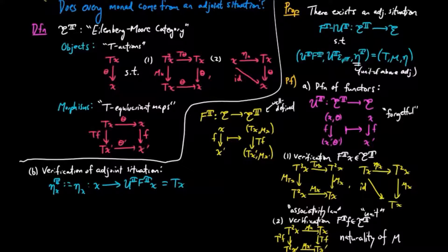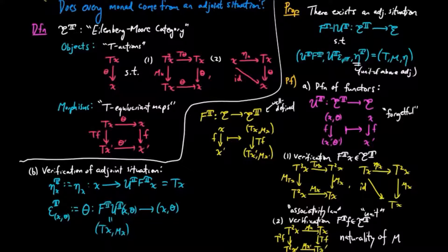We define the counit epsilon^t on a component (x, theta) to be the t-action morphism theta. This works because F^t ∘ U^t acting on a t-action (x, theta) is equal to (tx, mu_x), the free algebra on x. We verify that theta is a t-equivariant map — the required square is the same as the first axiom for the definition of a t-action. So the counit is well-defined.